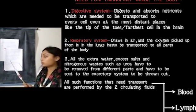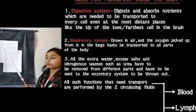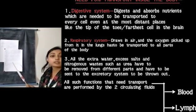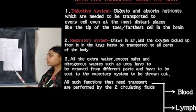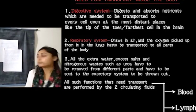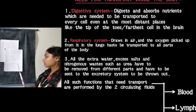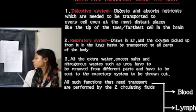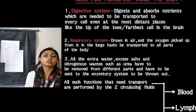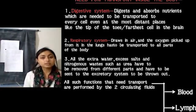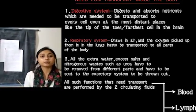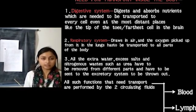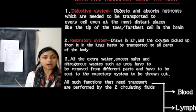We sweat, and these waste substances have to be sent to the excretory system to be thrown out. All such functions that need transport are performed by two circulatory fluids, which are blood and lymph. Regarding lymph, you will learn about it later in your higher classes.